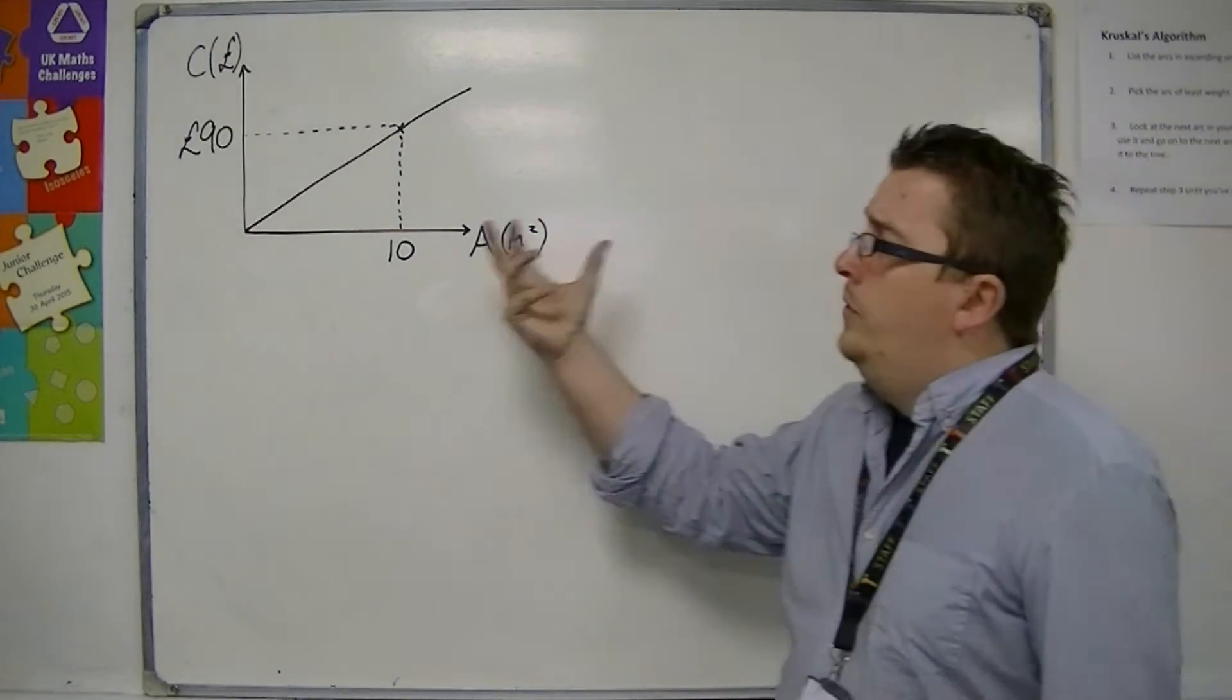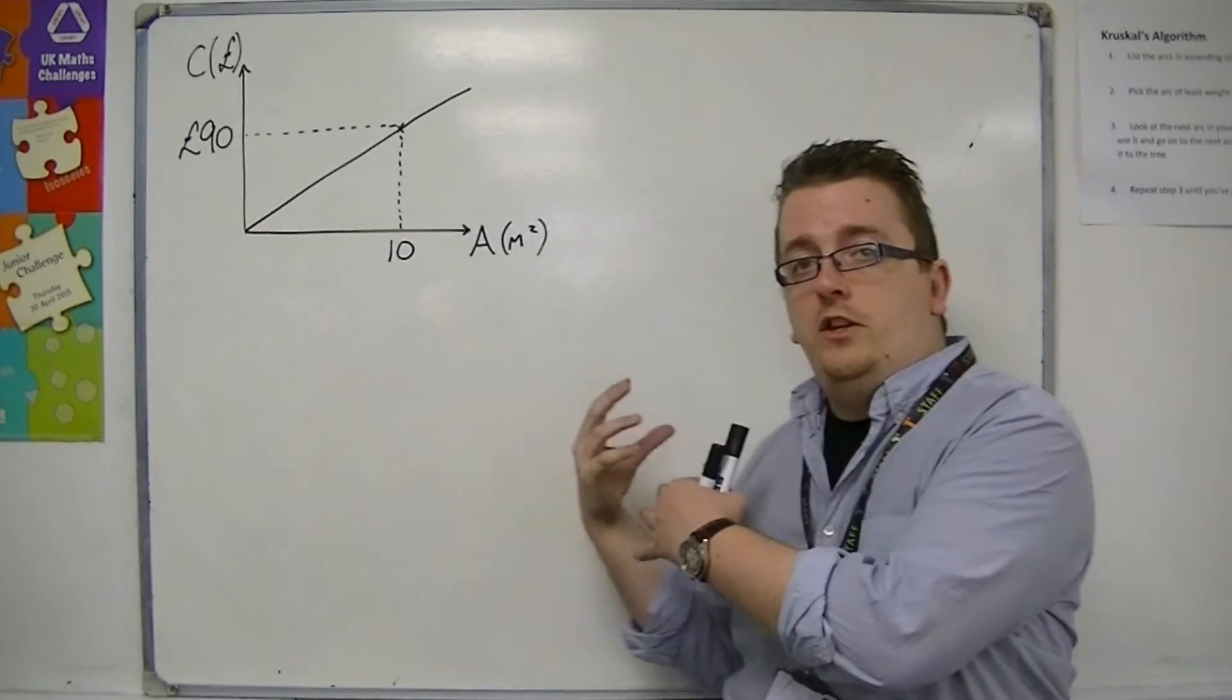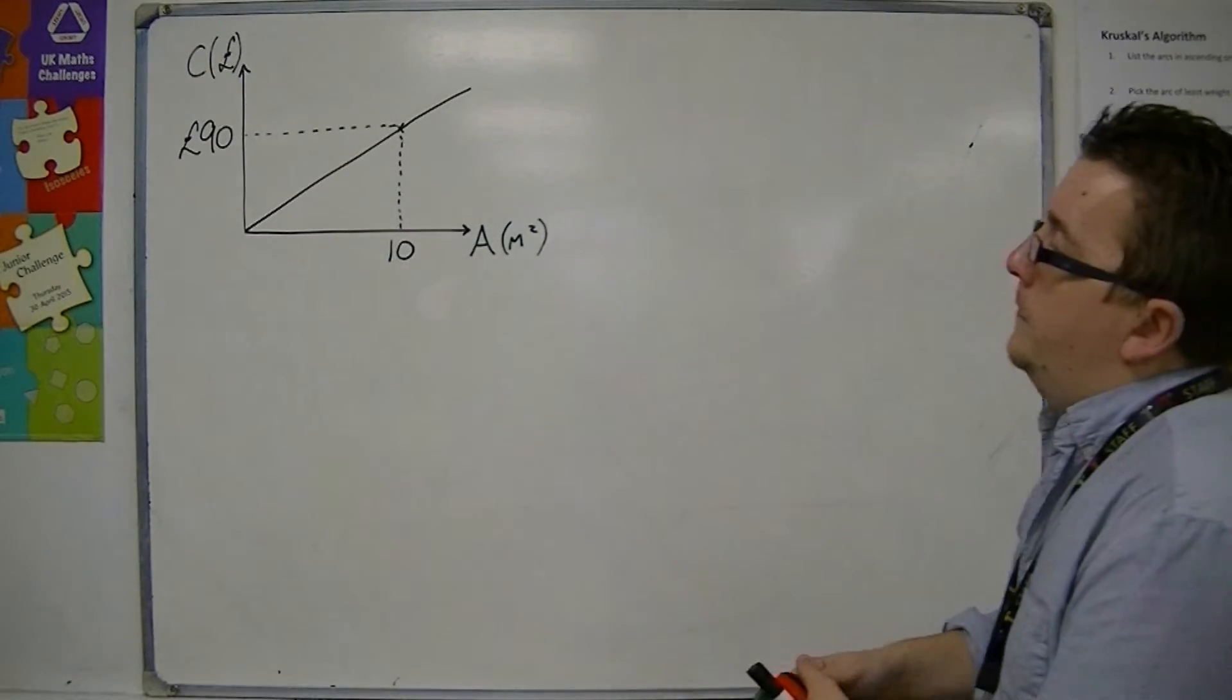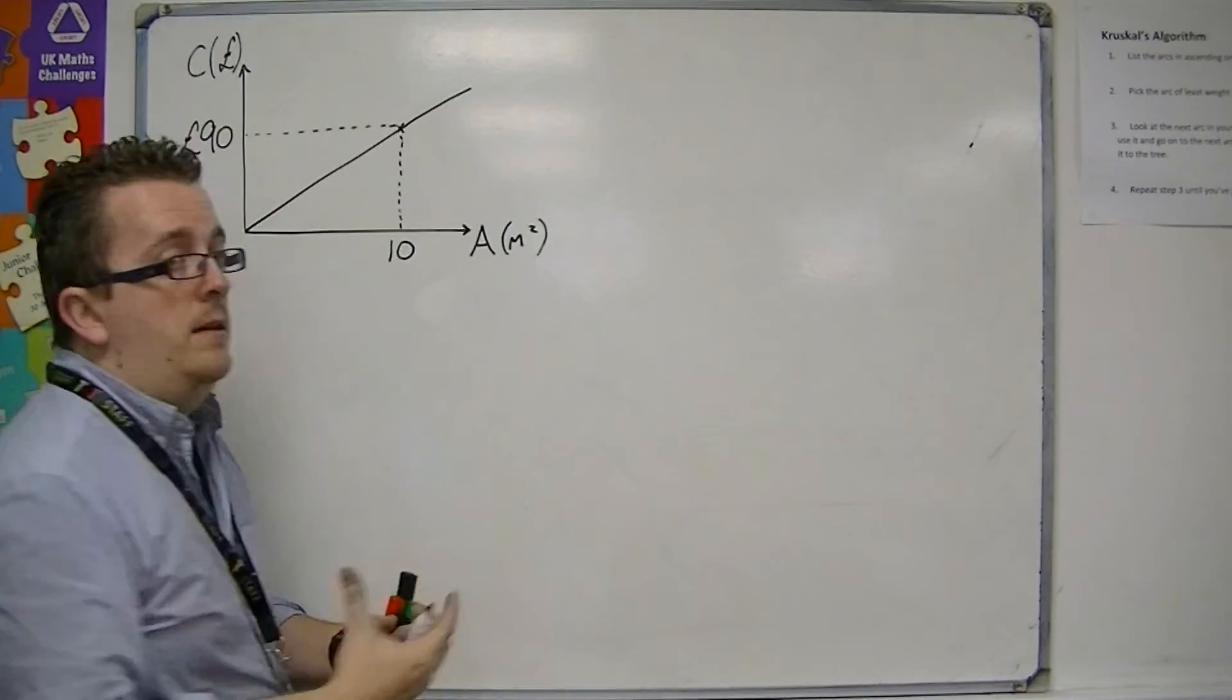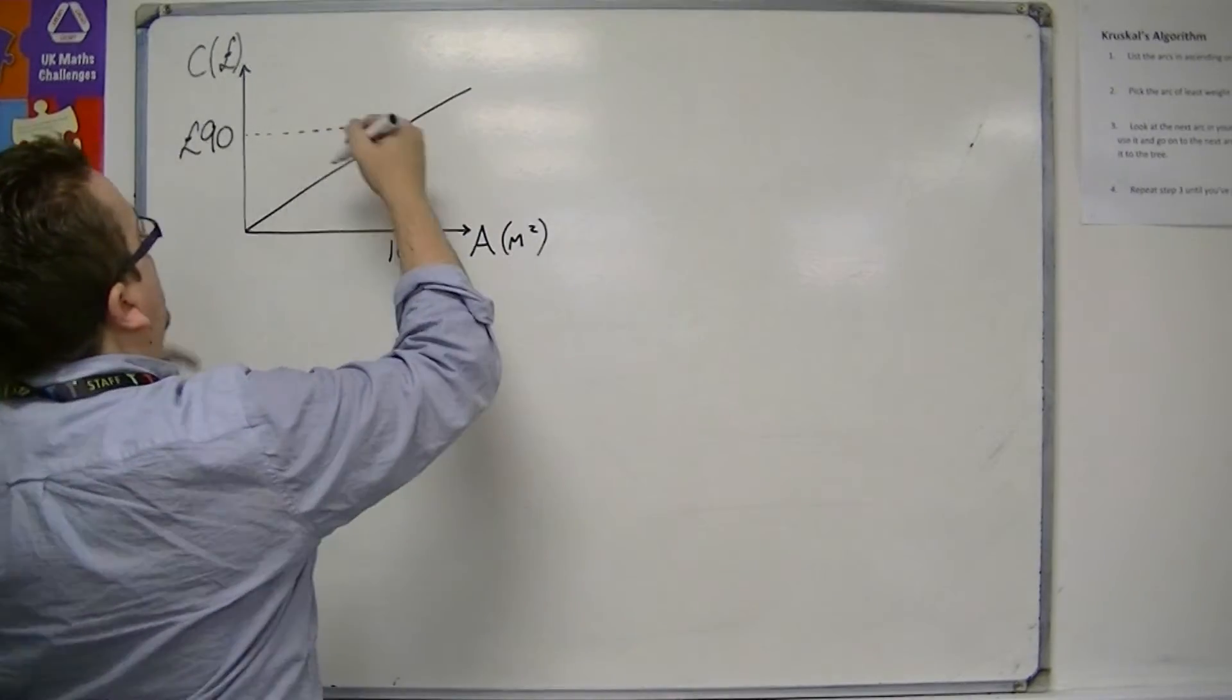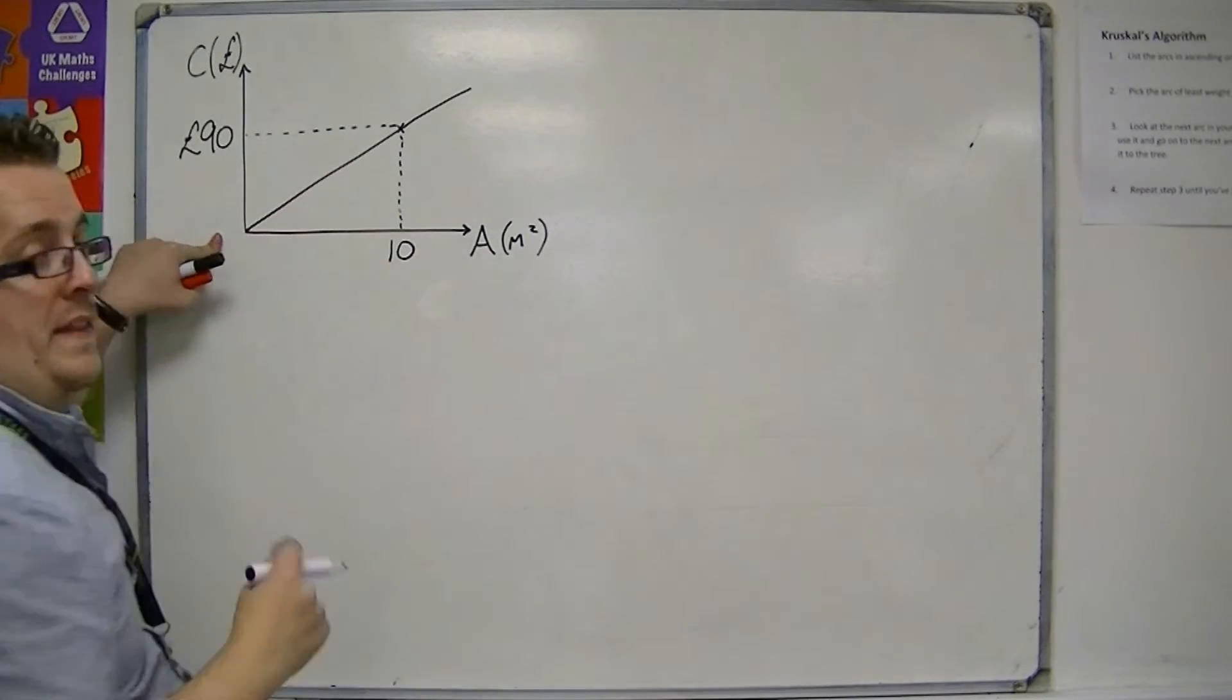This represents how the area can change and how that will alter the cost. You could look at the gradient of this line, using the information that we learnt with linear graphs, to look at the difference in the cost over the difference in the area.